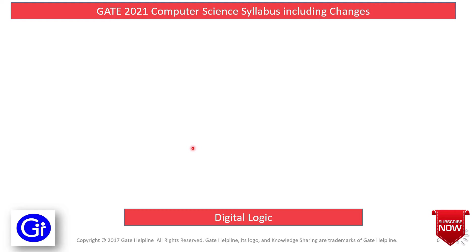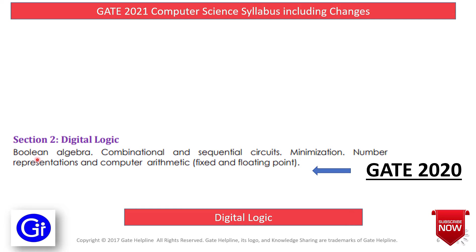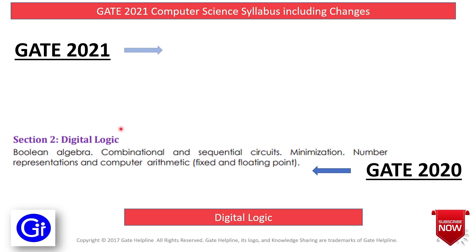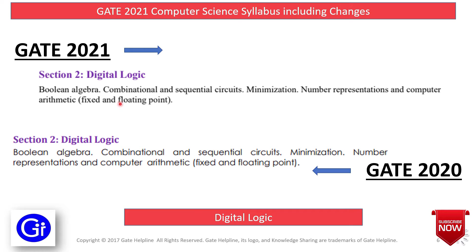The next subject is Digital Logic. The GATE 2020 syllabus comprises Boolean Algebra, Combinational and Sequential Circuits, Minimization, Number Representation, and Computer Arithmetic — that is, fixed and floating point. The GATE 2021 syllabus has no major difference, so there are no changes since GATE 2016.